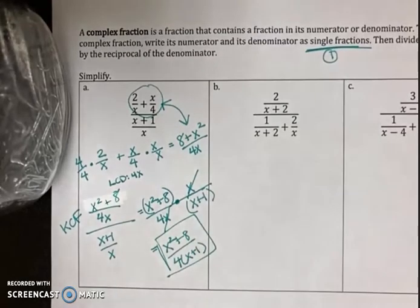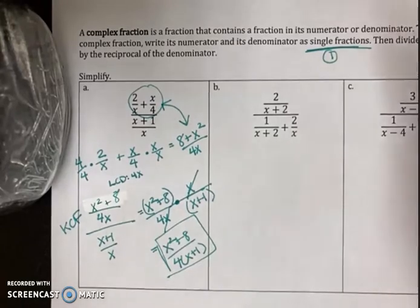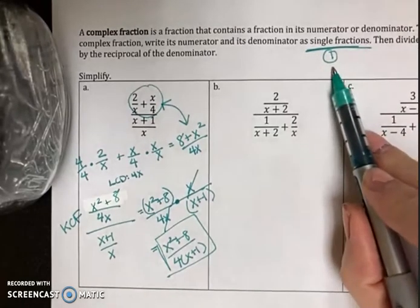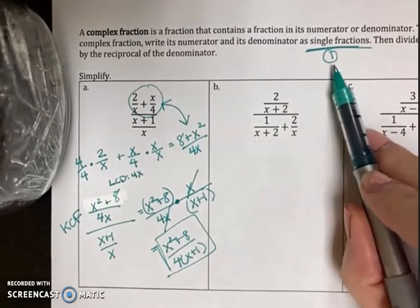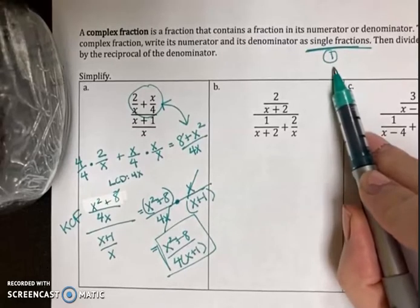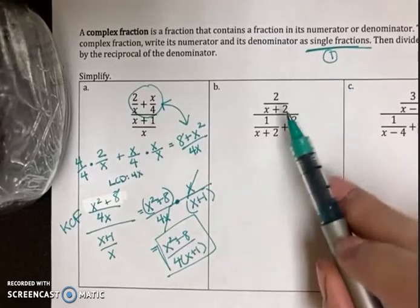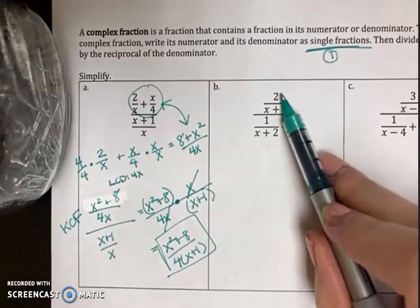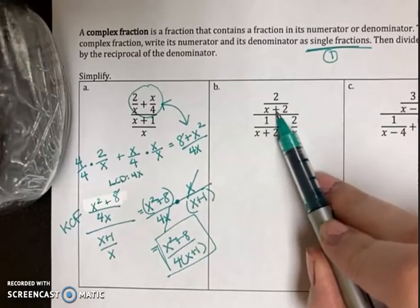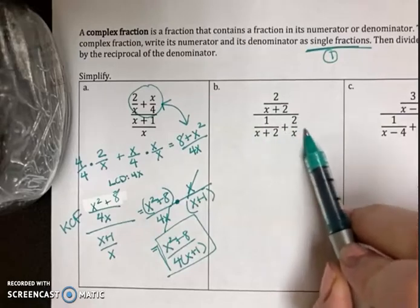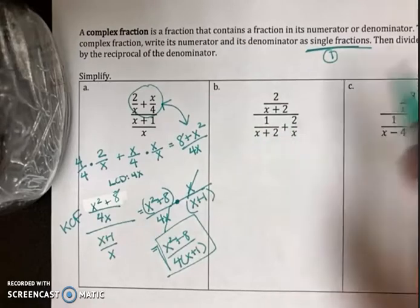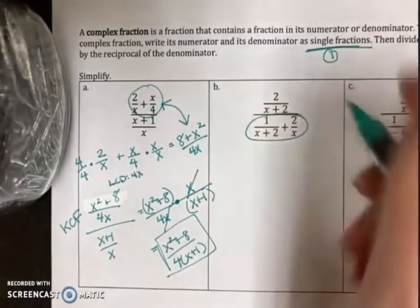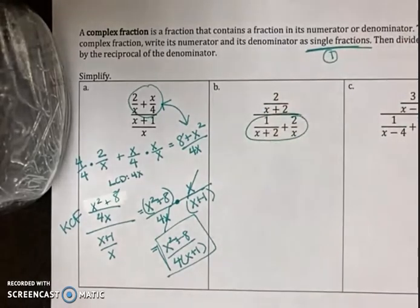So part B. Once again, the first thing we should do is simplify so that it's a single fraction in the numerator and in the denominator. When I look at part B, the numerator is already one fraction. But the denominator is adding two fractions together. So I need to add this before I can actually divide.